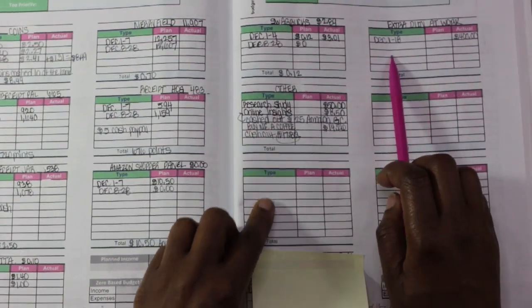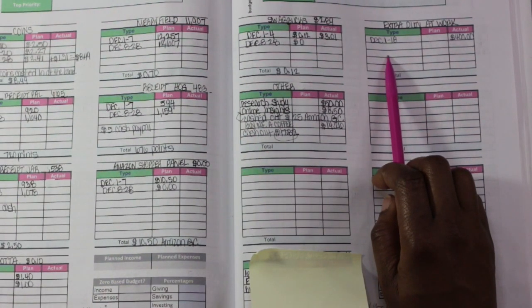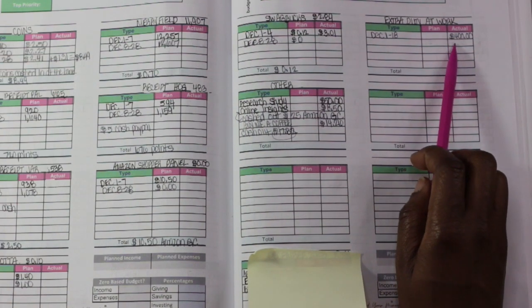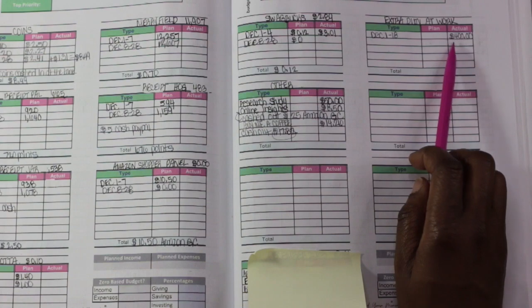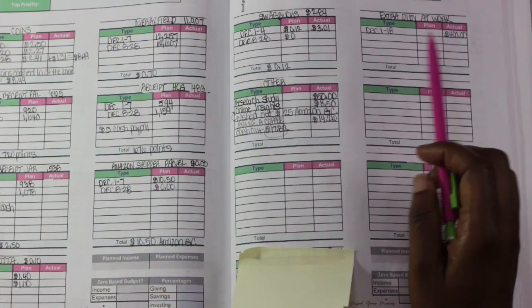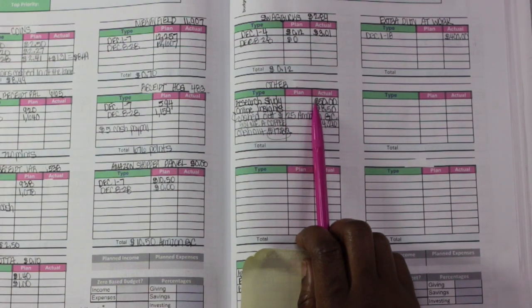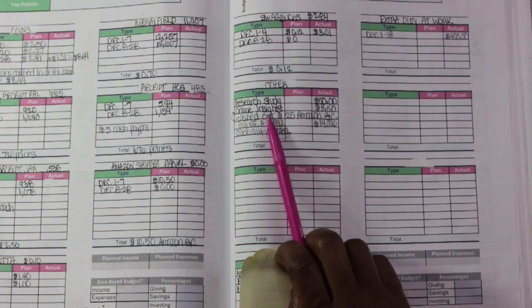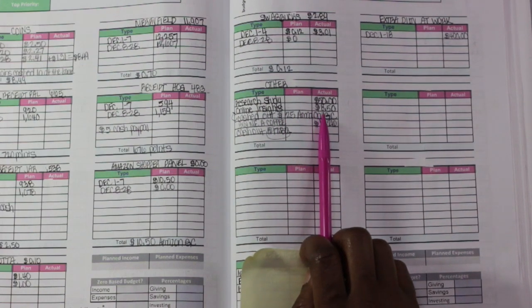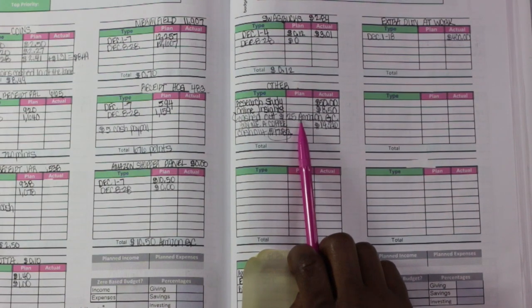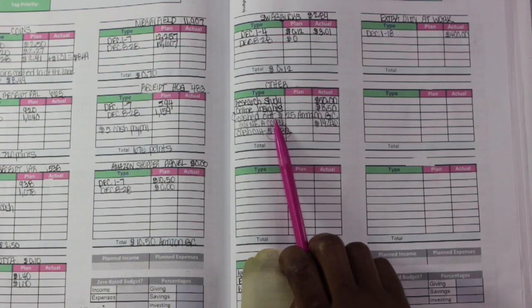Extra duty at work. So I do extra duty which consists of lunch duty and also monitoring students in a blended learning lab, so basically like a hybrid setting for them to learn. And I earned an extra $400 for the month at work for doing so. Next we have a research study that I completed and I was paid $50 for that. And then we have Online Insights. I earned $8.50 there. I did cash out for a $25 Amazon gift card with Online Insights.